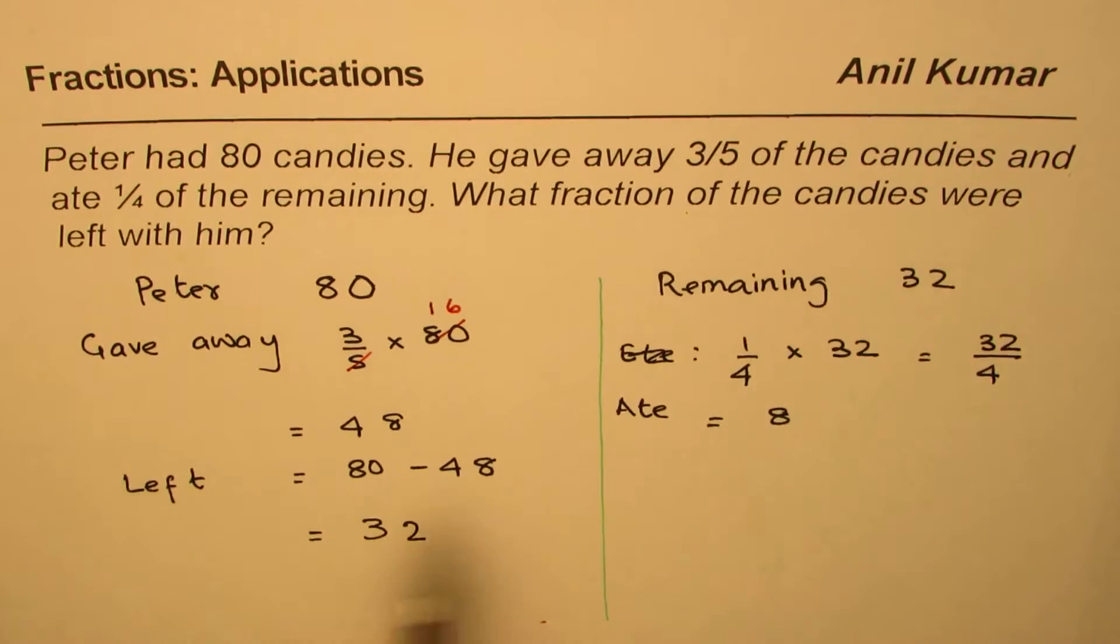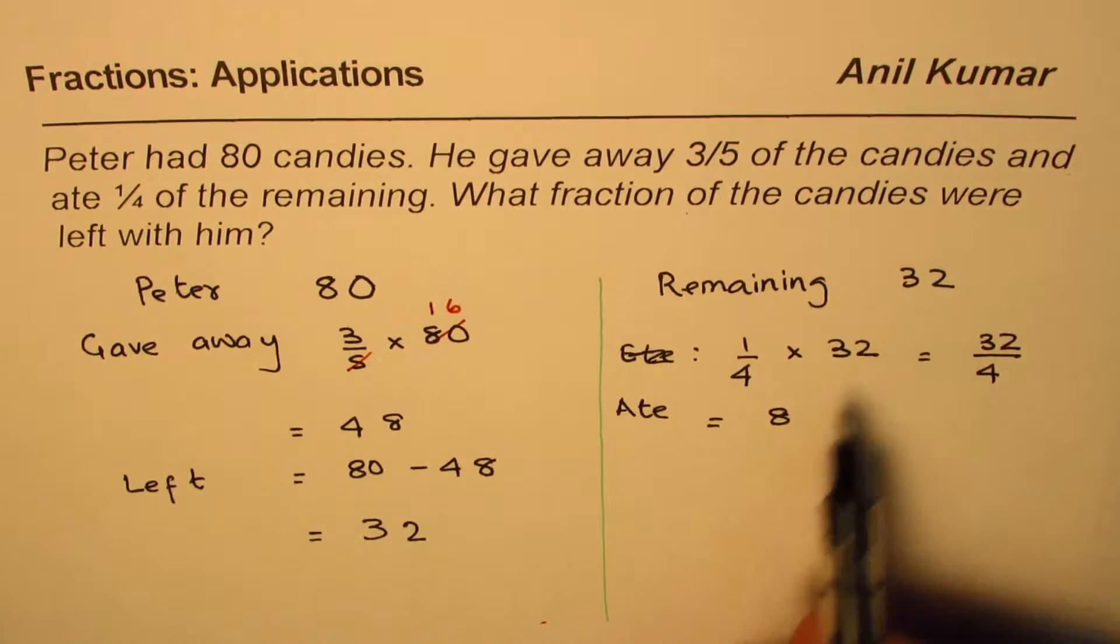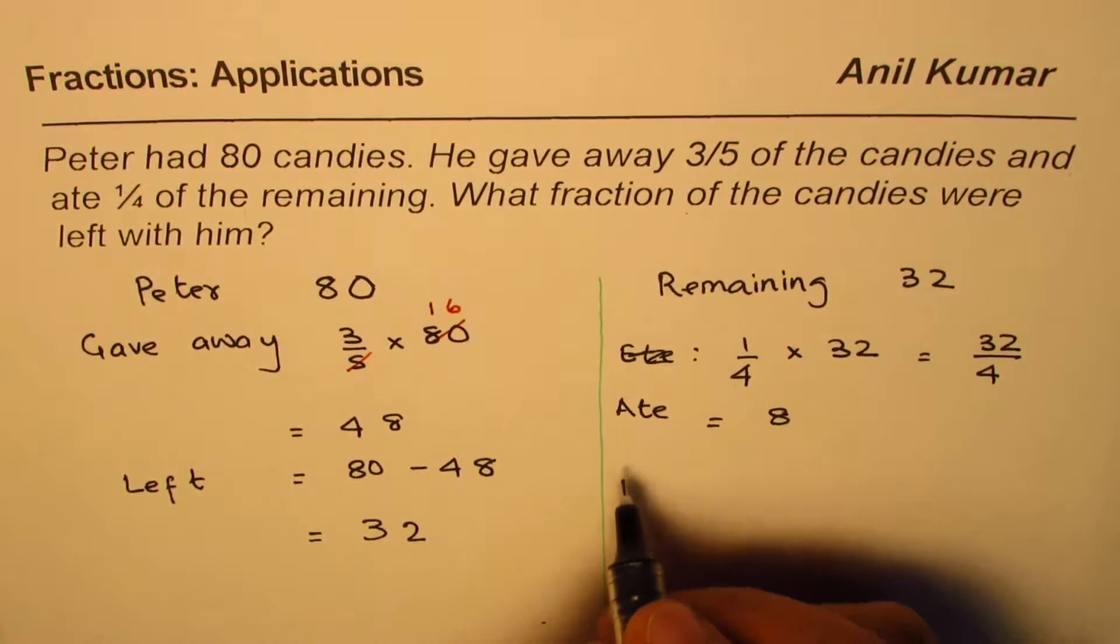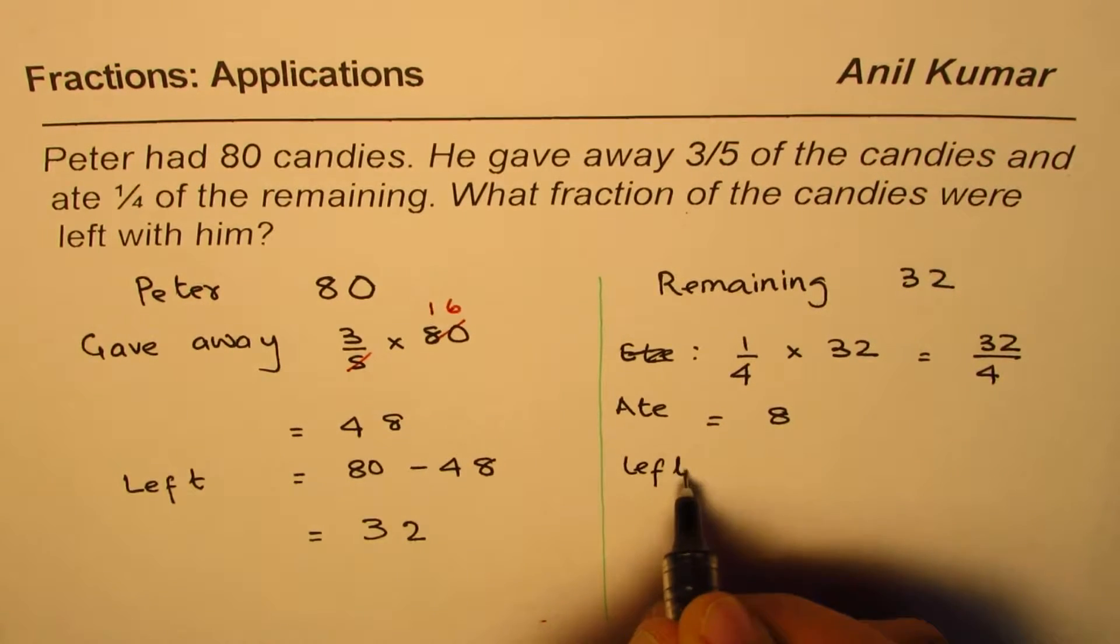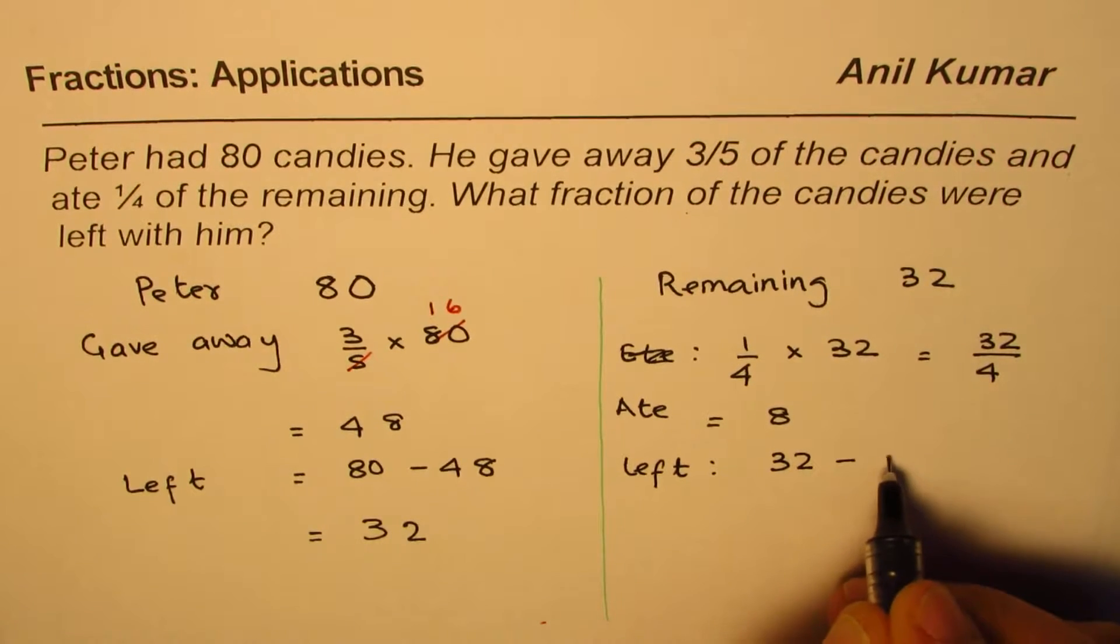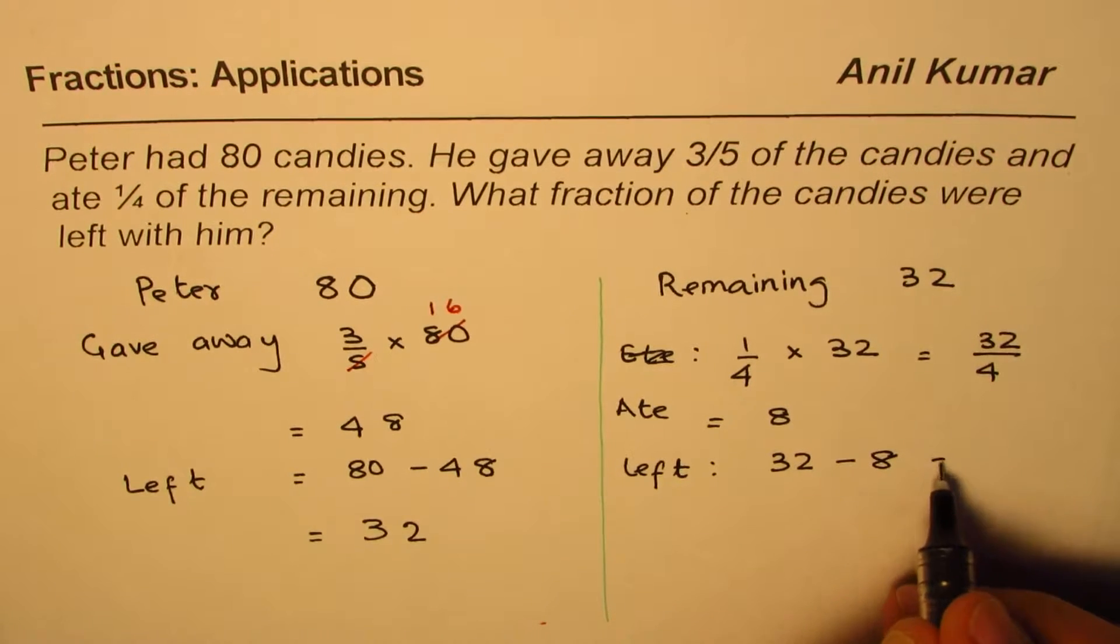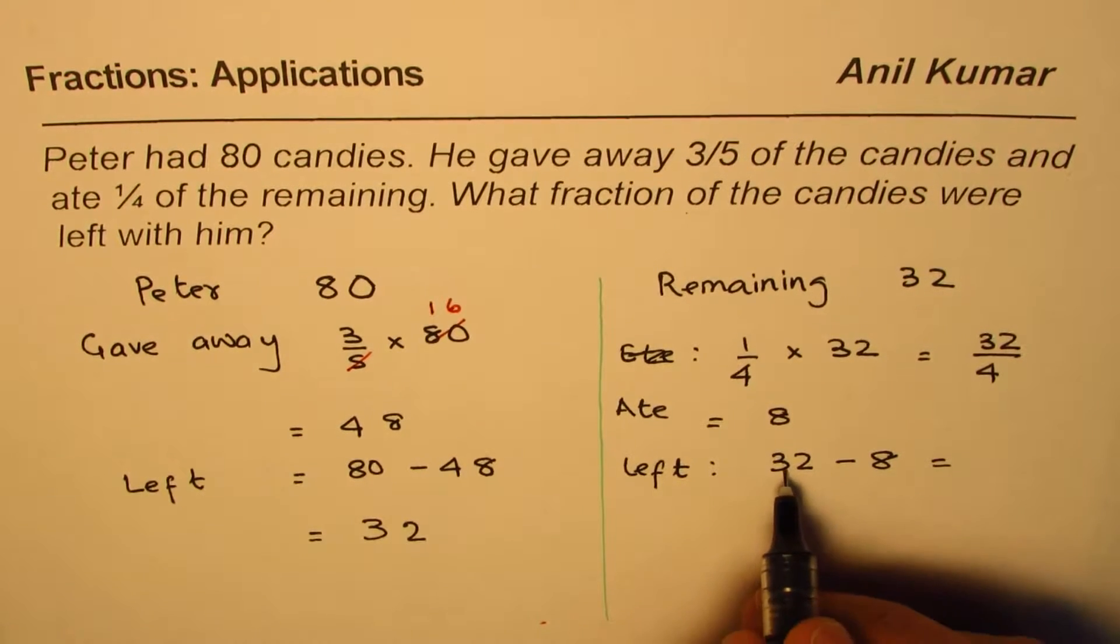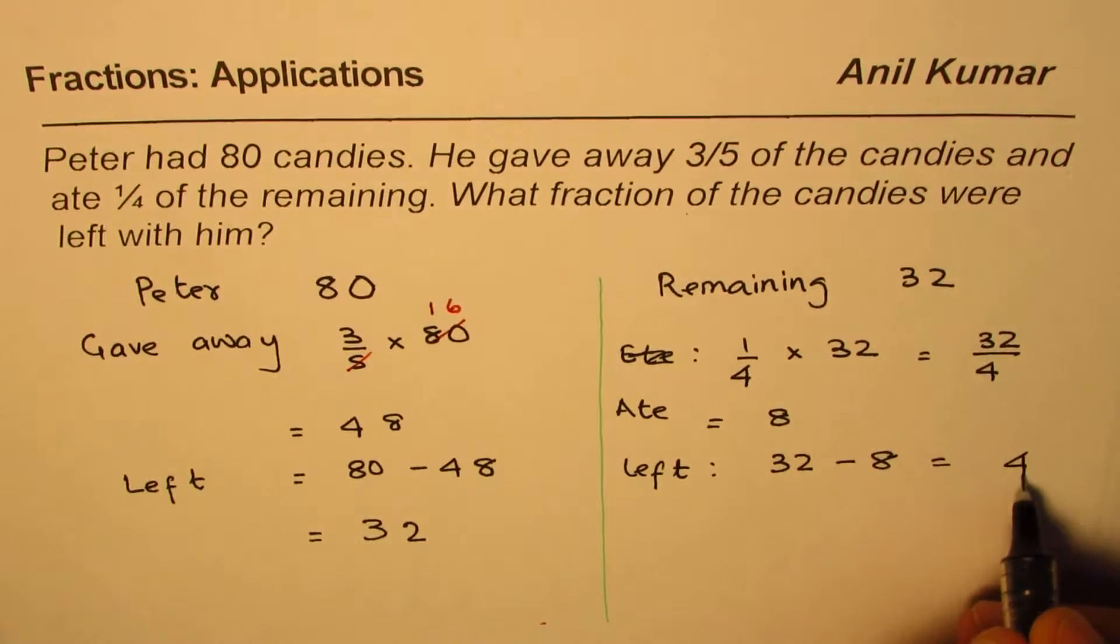So what fraction of the candies were left? So from 32, he ate 8. So left at this stage is 32 take away 8. When you take away 8 from 32, 12 take away 8 is 4, and we're left with 24.